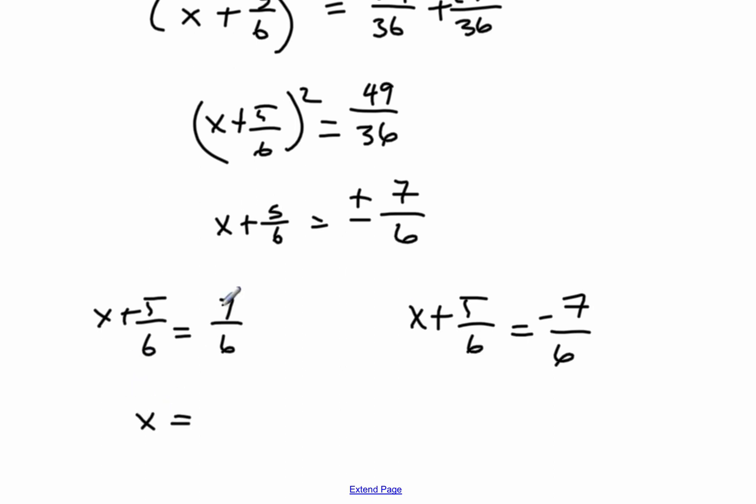Solving this side, I get x is equal to 2 sixths, or 1 third. So 7 sixths minus 5 sixths, x equals 2 sixths, or 1 third.